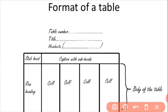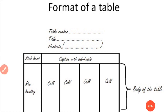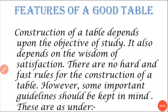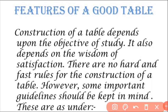Now you can see the format of a table. First of all there is the table number, then the title, then the head note. The first column contains the row stubs, followed by the body of the table.